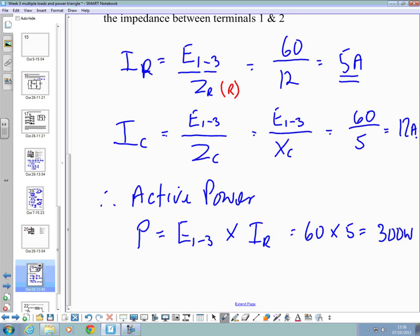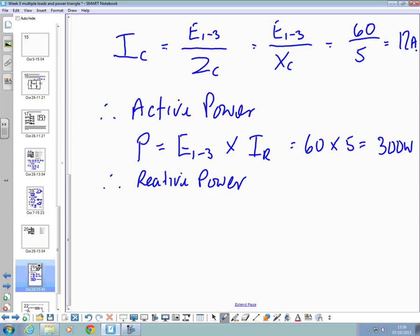We can also say, reactive power, Q, but remember, be careful here. We're only talking about this parallel part at the moment, just the capacitor and the resistor. So we're isolating them. So QC, I'm going to call that PR and QC, is equal to E13 times IC. That's 60 times 12, equals 720 var. Everyone happy with that?